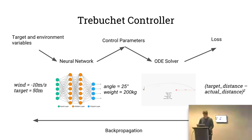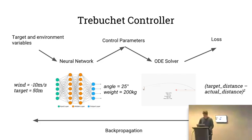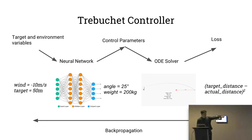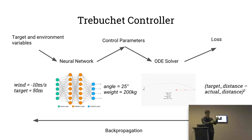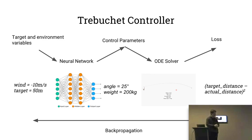Going back to the trebuchet: we're going to do something similar where we differentiate through the trebuchet — going from the distance we achieved back to a change in angle that gets us closer to the target distance we wanted. But this time we're doing something more interesting: stacking this with a normal neural network. You can think of this as a sequence in PyTorch — one layer is a neural network and one layer is a trebuchet simulator.